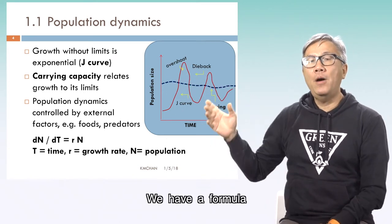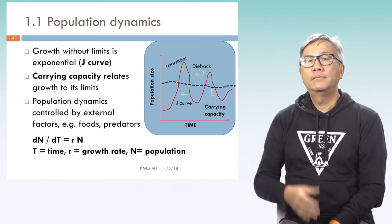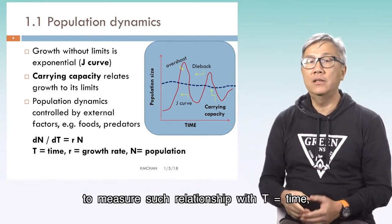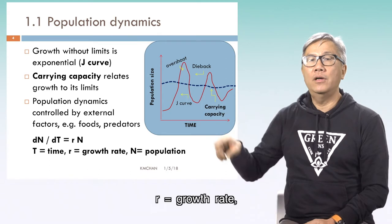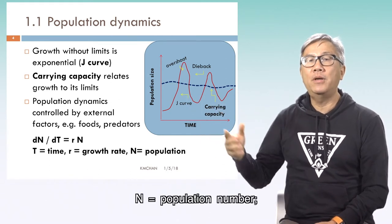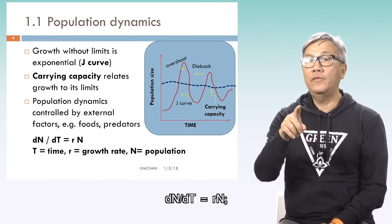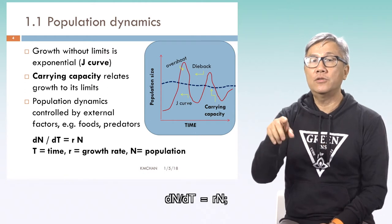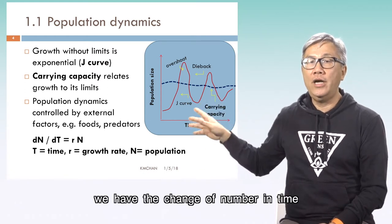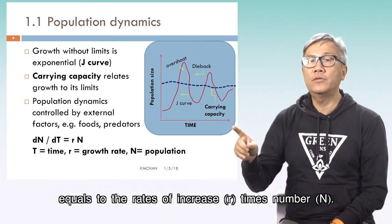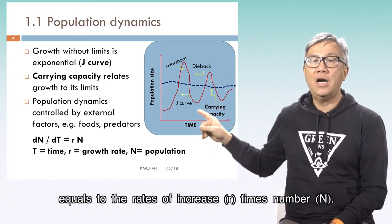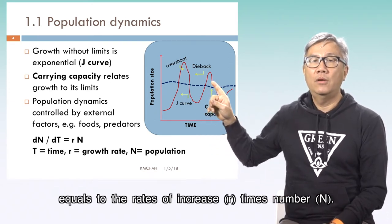We have a formula to measure such relationships, with t as time, r as growth rate, and n as population number. So dn over dt equals rn — the change in number over time equals the rate of increase times the population number.